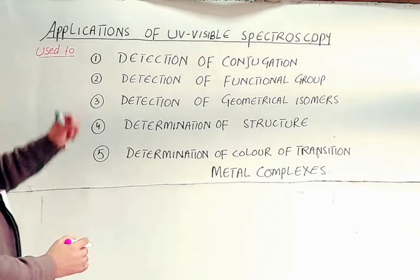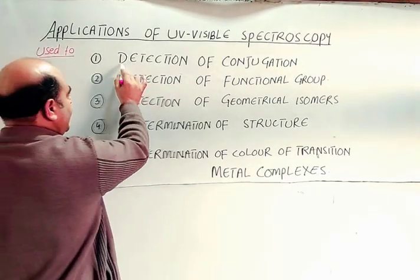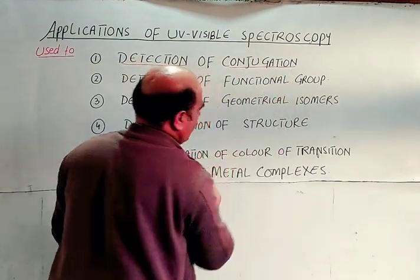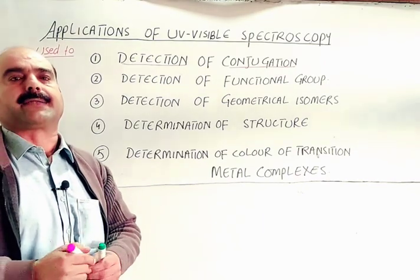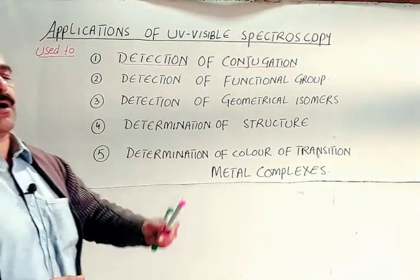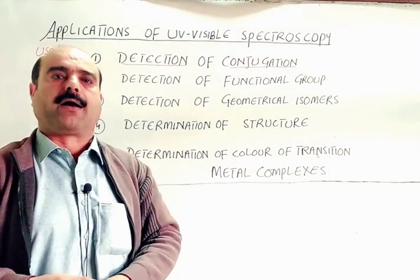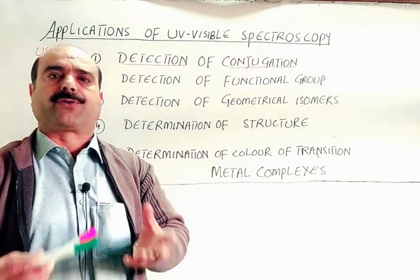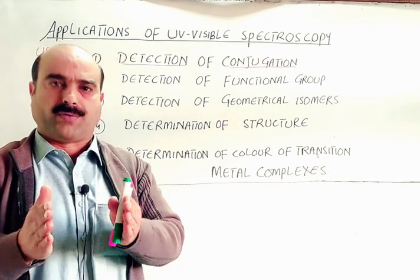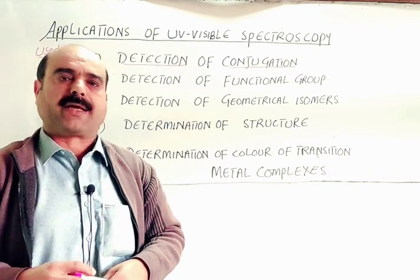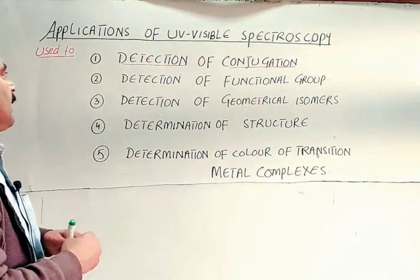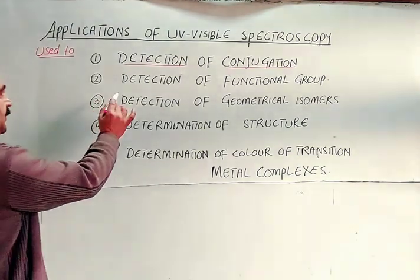Number one: UV-Visible Spectroscopy is used for the detection of conjugation in a compound. Conjugation means alternate single and double bonds. In organic compounds, conjugation causes electronic transition and electronic excitation, and longer wavelength radiation is absorbed, so we can directly determine the conjugation of a compound.